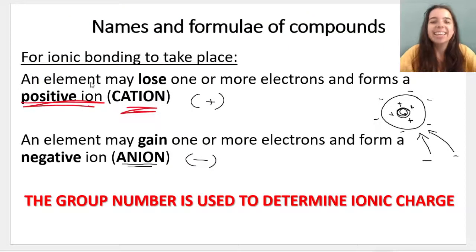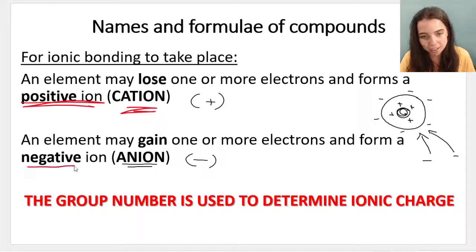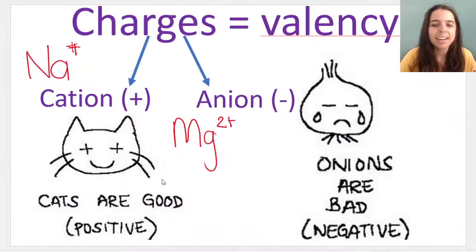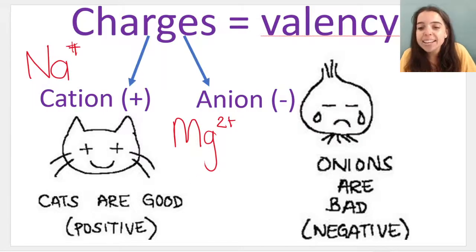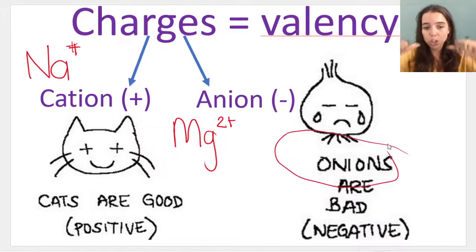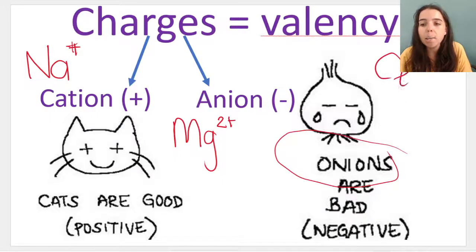Anions gain electrons. If you are a neutral atom and someone gives you electrons, you're getting negative stuff. If you get negative stuff, you become negative. So you will form a negative ion, which we call an anion. How do we remember that? Anion sounds like onions, and onions make you cry. They're bad. They're negative.